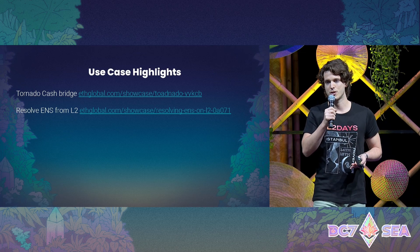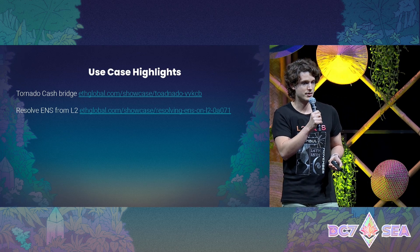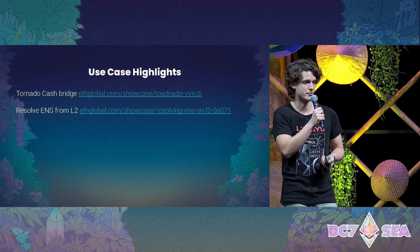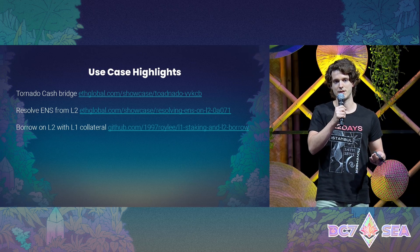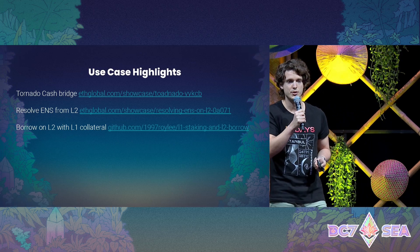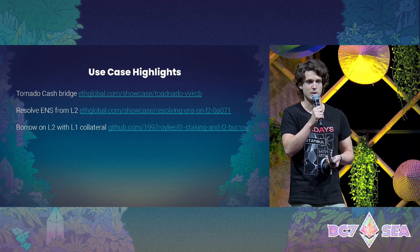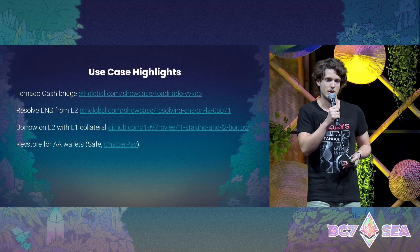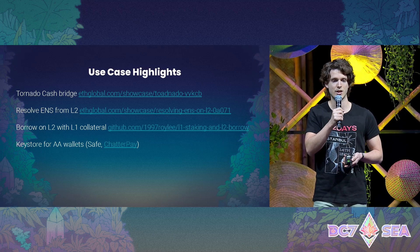Or imagine you deploy your dapp on an L2 that doesn't have ENS — in this case you could just use L1SLOAD to directly look up names from the L1 ENS. Another example is DeFi: you could create a DeFi dapp where you can borrow on L2 directly using collateral on L1 without bridging it from L1 to L2.